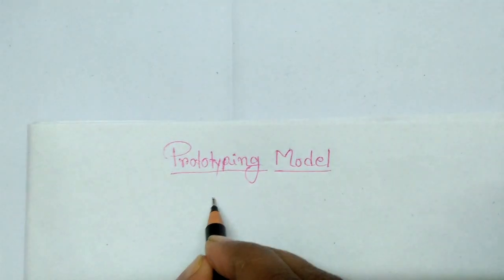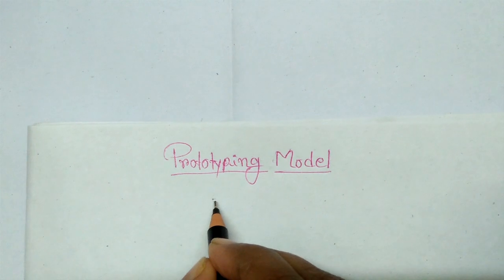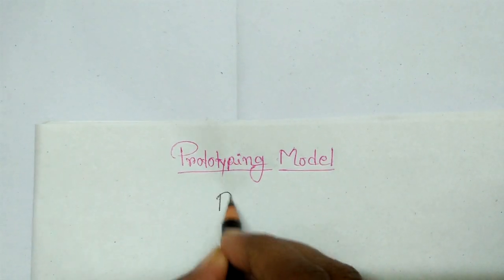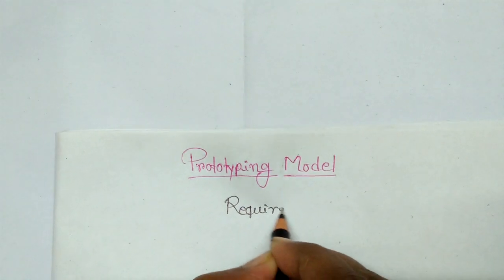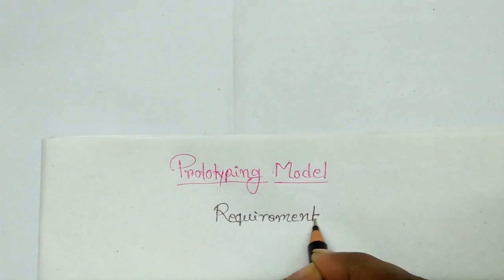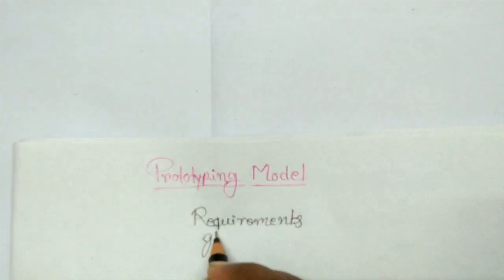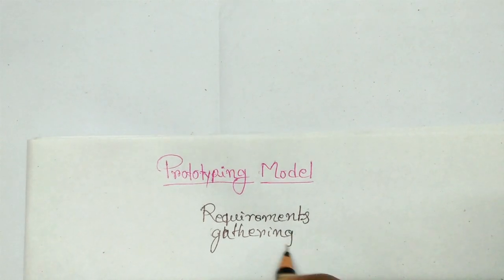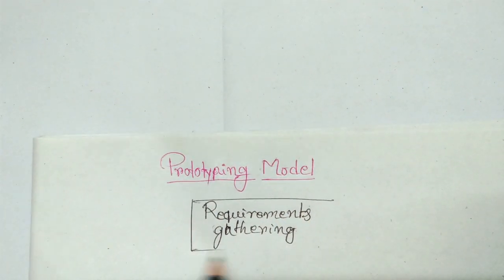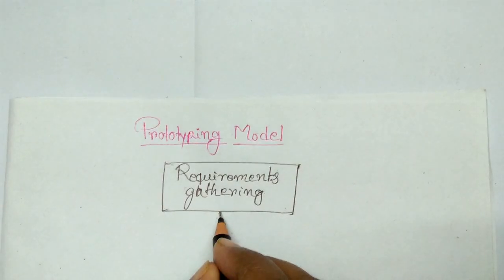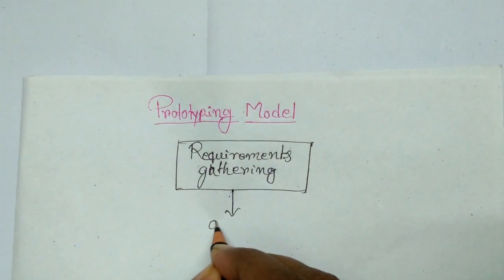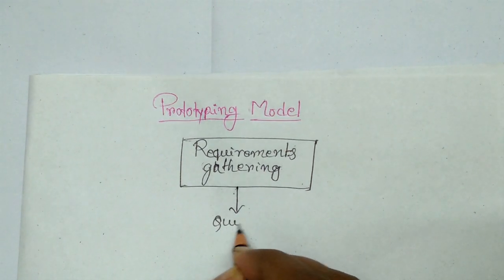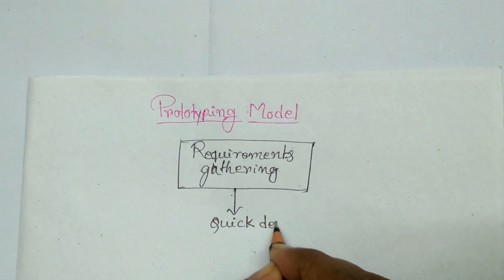So firstly we can draw the prototyping model. The first step is requirement gathering — here customer requirements are gathered. This is the first step of the prototyping model.